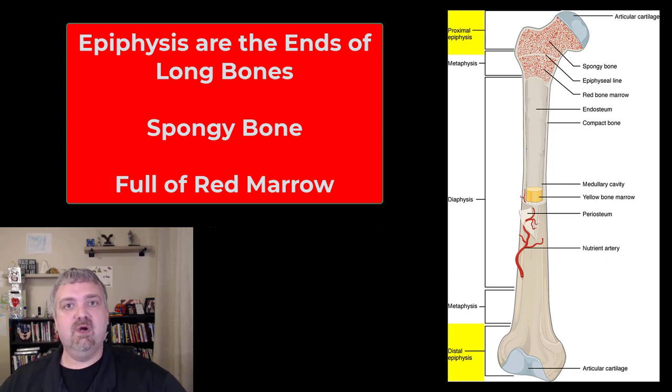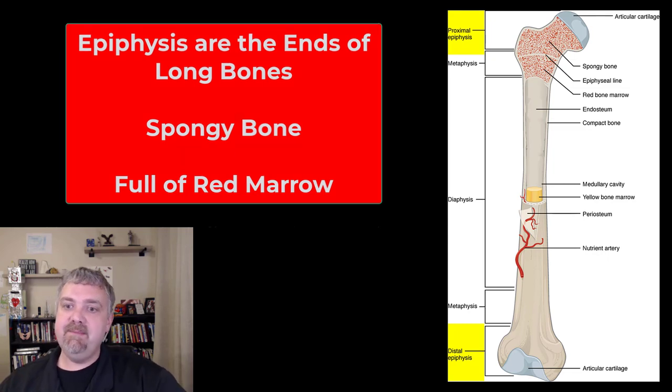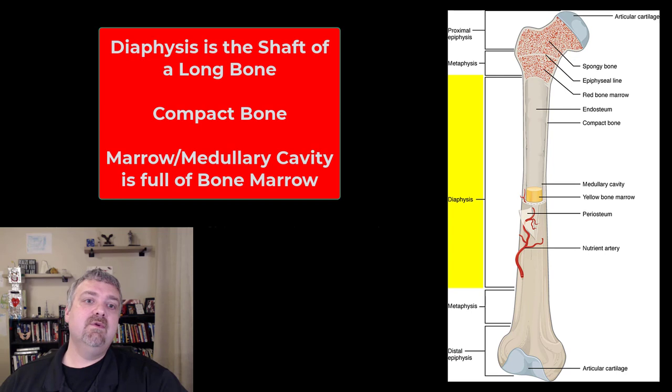We'll cover them more in our next unit because that's where our joints or articulations are. The shaft of a long bone is called the diaphysis. The diaphysis is primarily compact bone, very strong and dense.